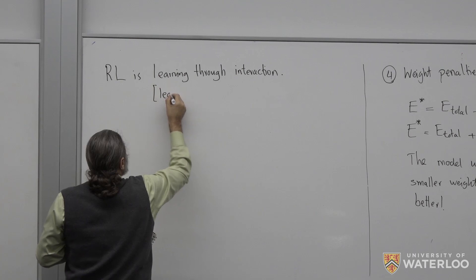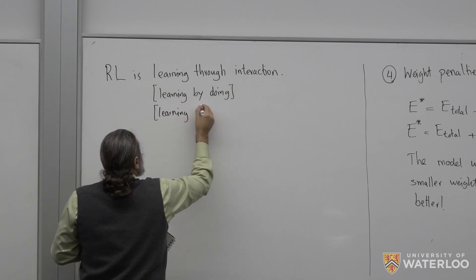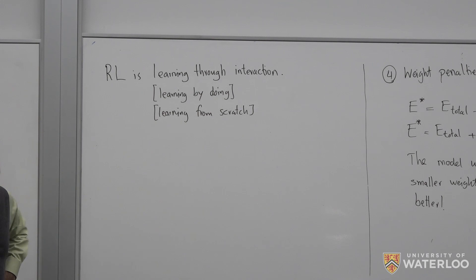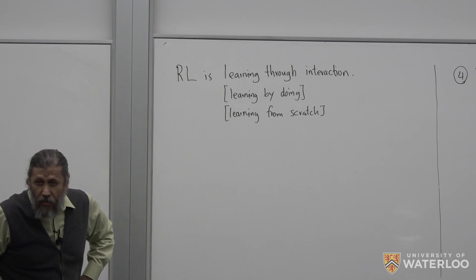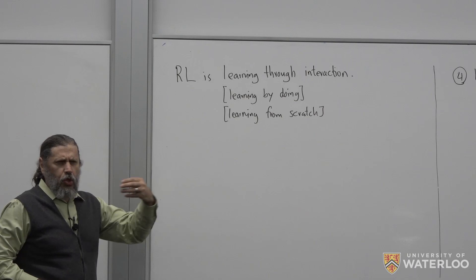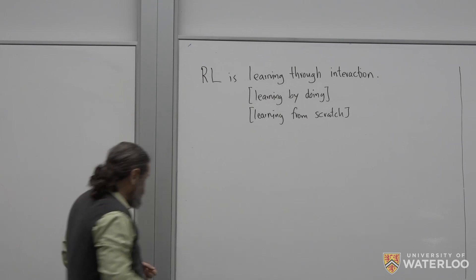Reinforcement learning means learning by doing, learning from scratch. This is the first time we talk about something that can start from scratch. You don't have a model, you don't have a distance measurement like in self-organizing maps, you don't have labeled data to calculate error. You learn by doing something from scratch. Whatever that is, you make big mistakes at the beginning.